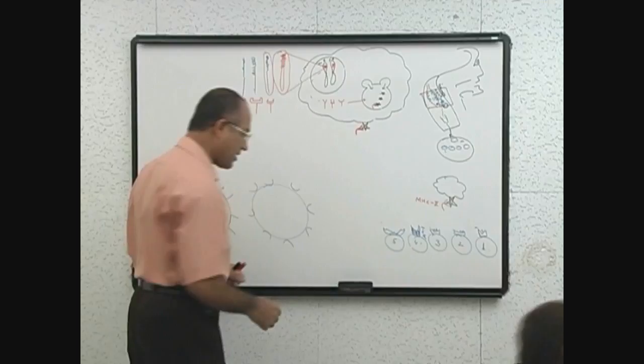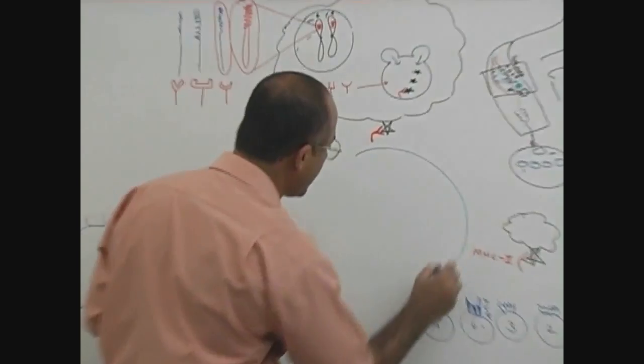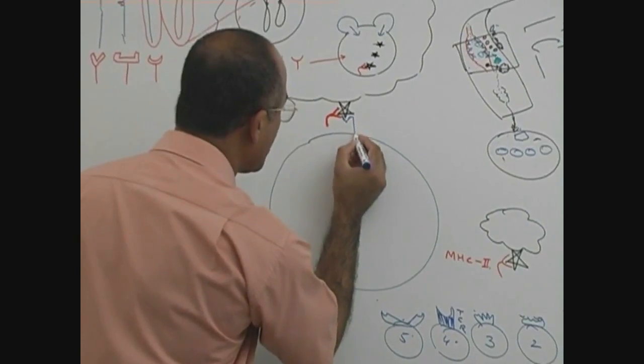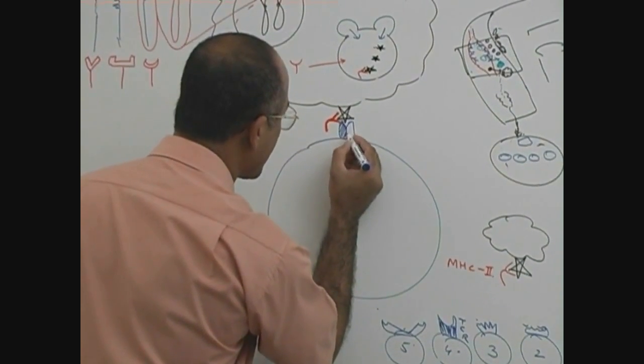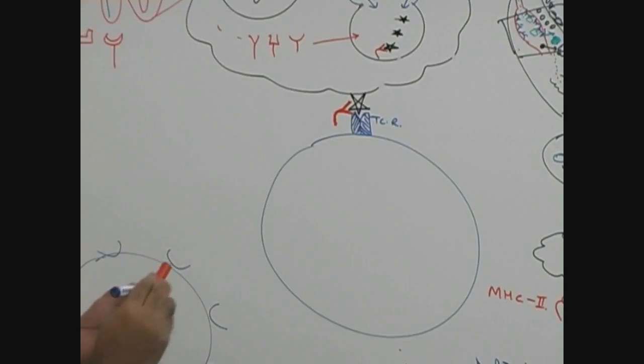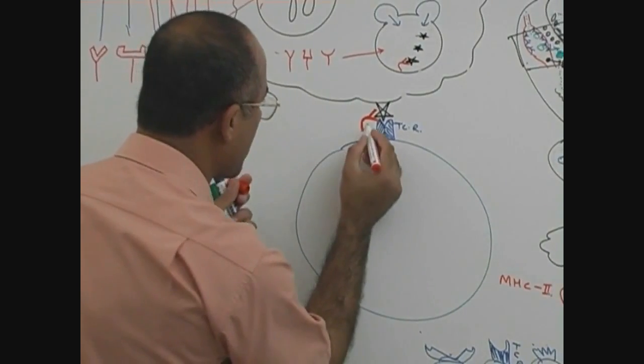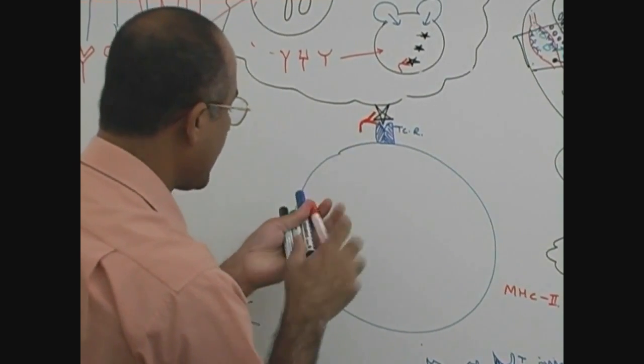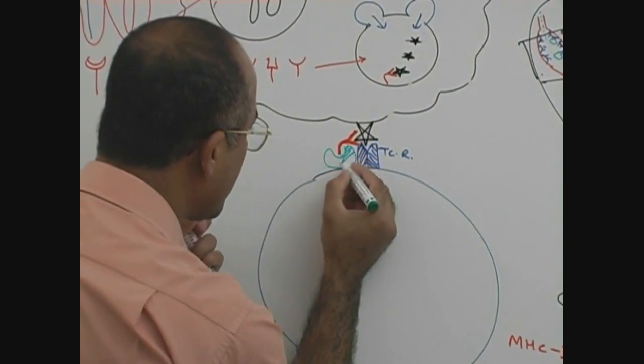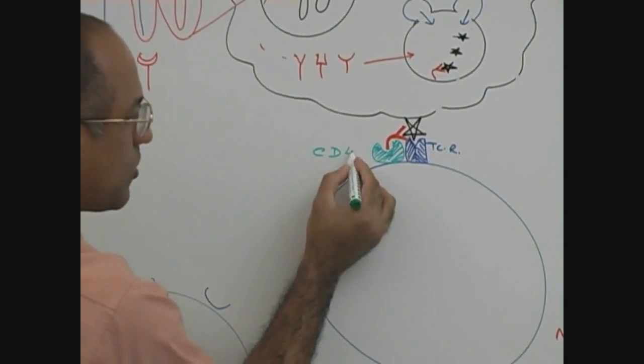Suppose this was the lymphocyte and on this lymphocyte antigens were fitting into this TCR. And then this was expressing one more molecule which could recognize the presence of class 2, and this molecule is called CD4.